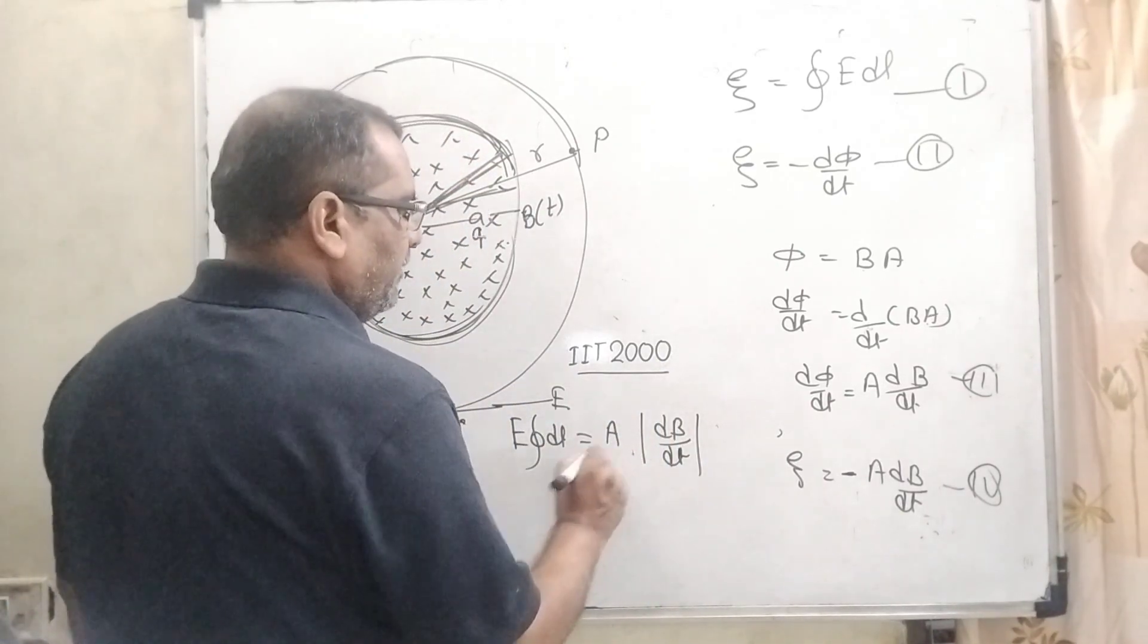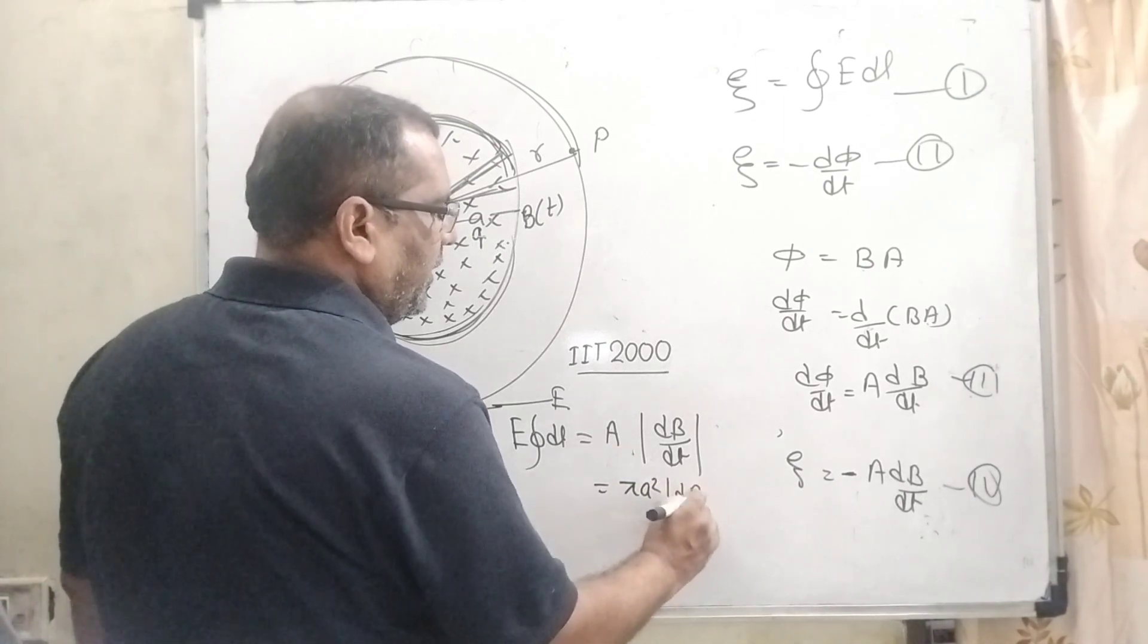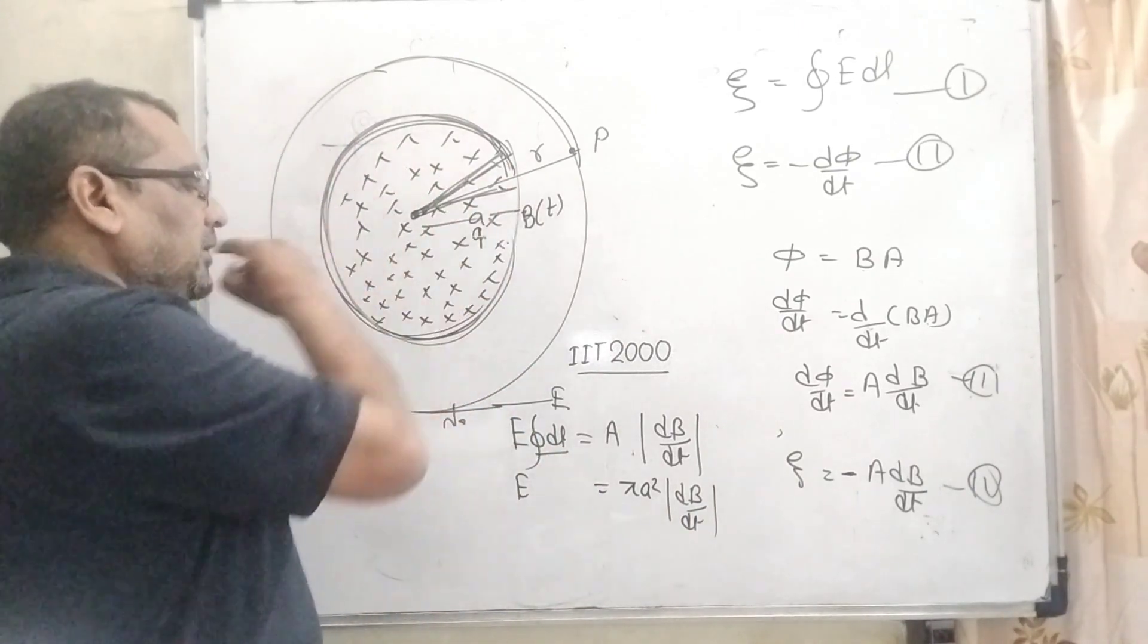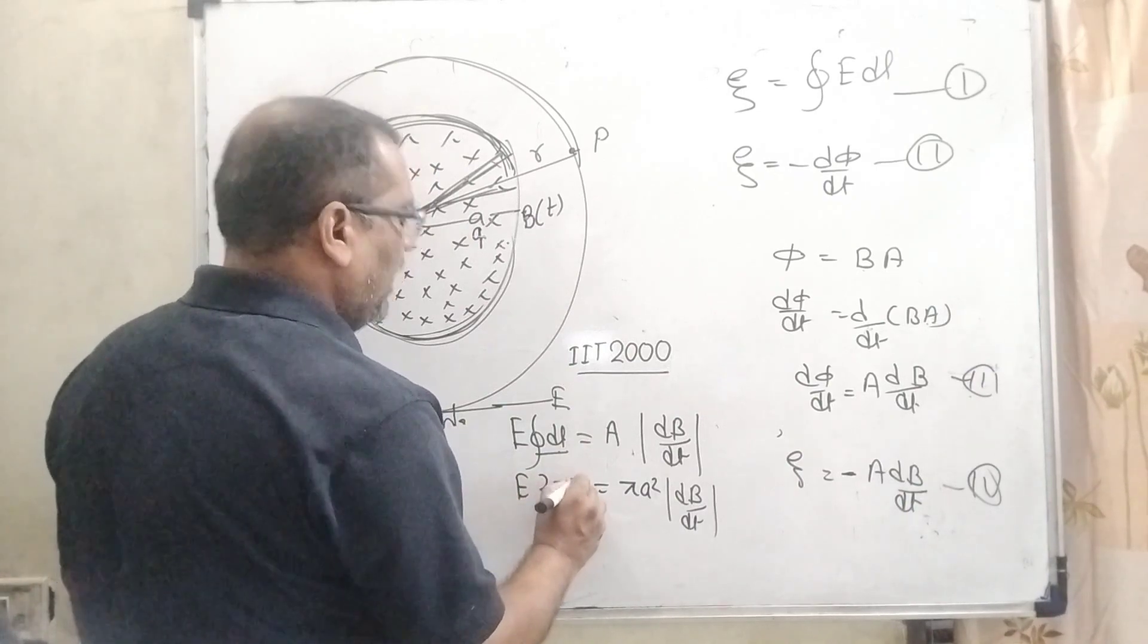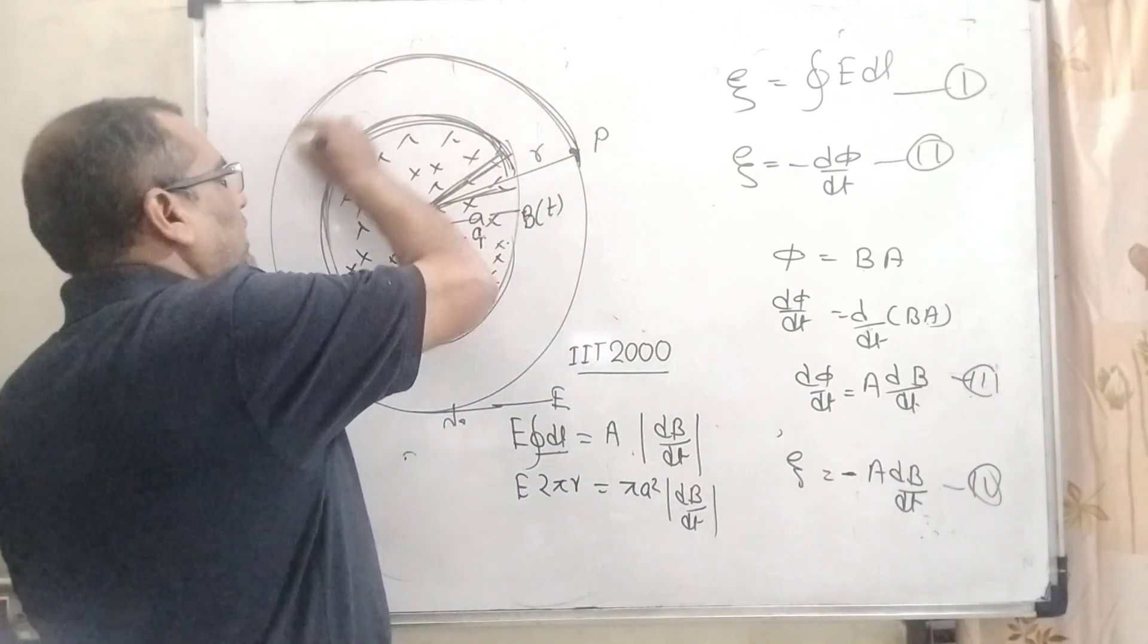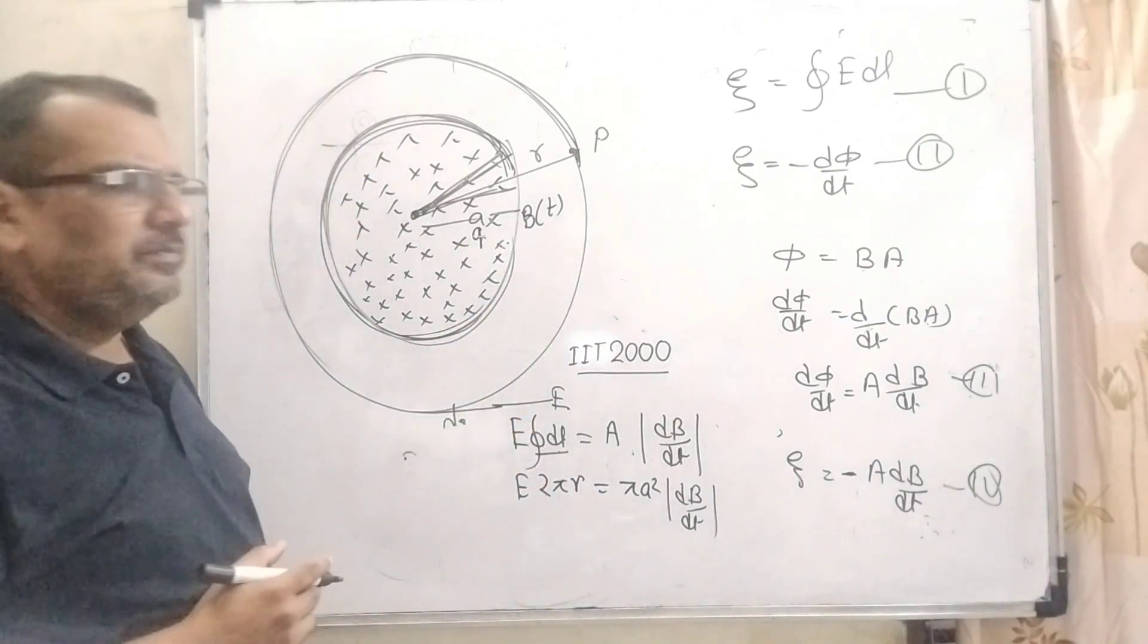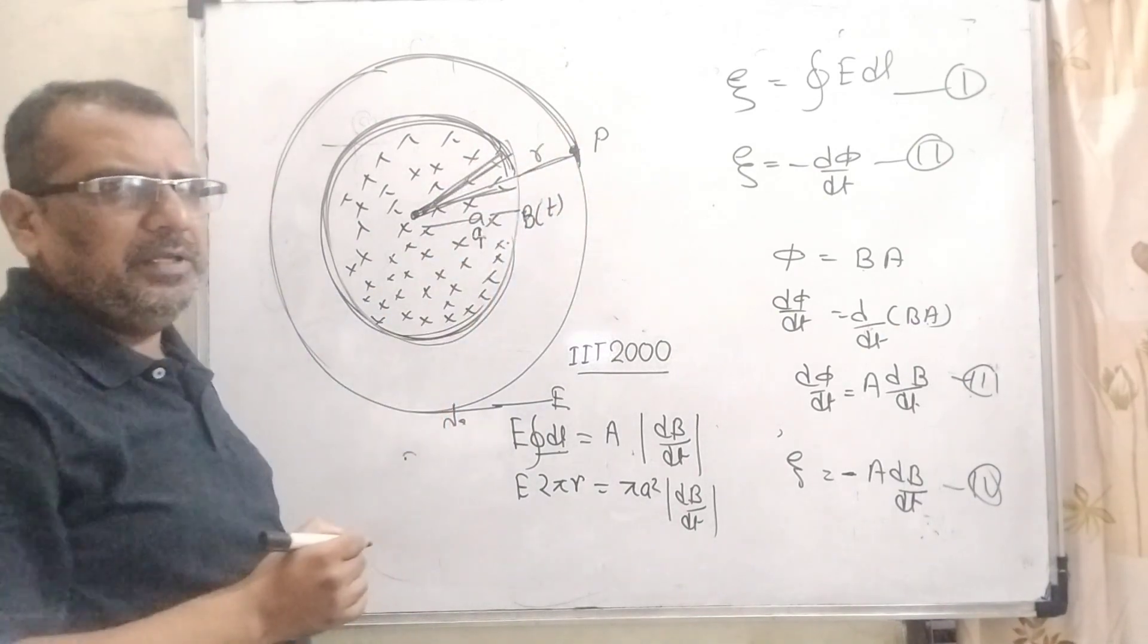So we have E times the total path length equals πa²·dB/dt. The total length dl around point P is 2πr. We could consider three conditions, but there's no need since point P is already located outside. Therefore, E·2πr = πa²·dB/dt.